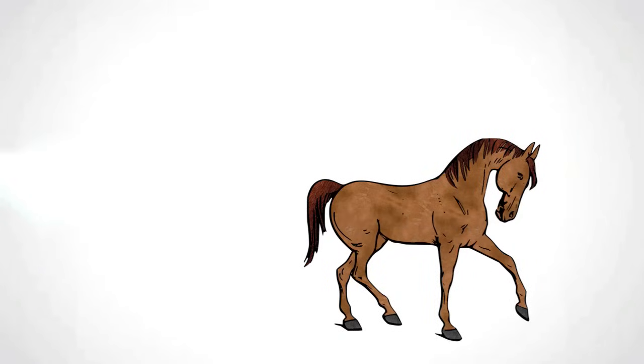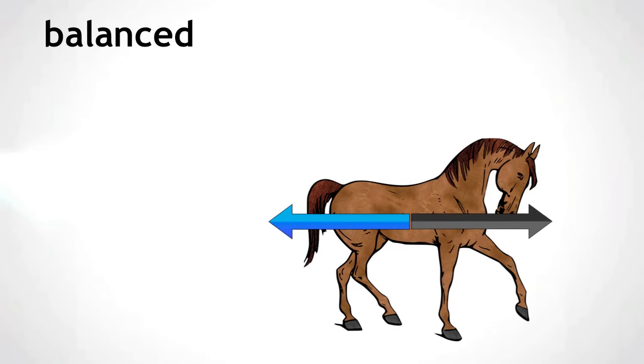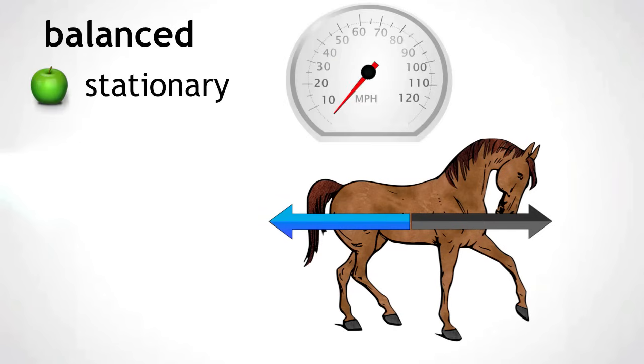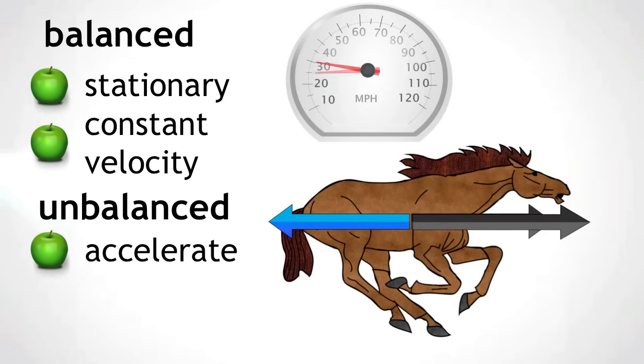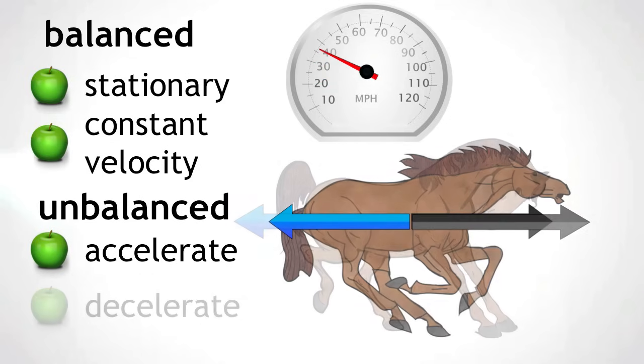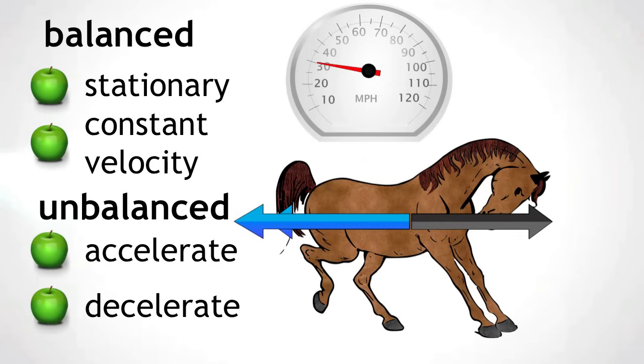So in summary, when the forces are balanced on an object, the object will either remain stationary or travel at a constant velocity. When the forces are unbalanced, the object will either accelerate, meaning an increasing velocity, or decelerate, meaning a decreasing velocity.